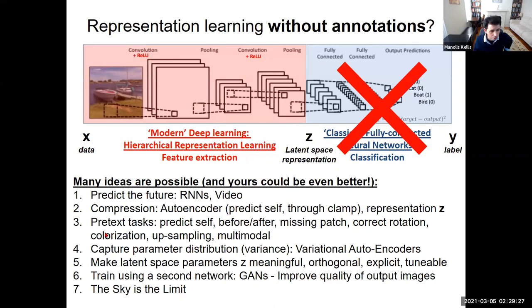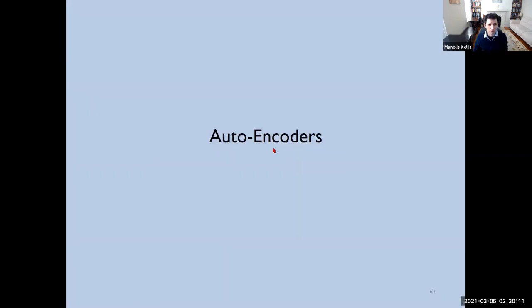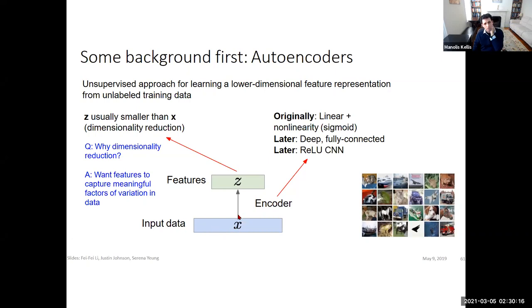The earliest view of all these was a pretext task where you're trying to predict self from self but going through a bottleneck — that bottleneck is the representation. You can think of this as taking the encoder, flipping it around, and expanding it back out through a compressed representation of the world. That's what autoencoders are about: you have some input data X, you extract features and encode X into a lower dimensional representation, and then use that lower dimensional representation Z to predict X all over again. It's an unsupervised approach for learning lower-dimensional feature representations from unlabeled training data.